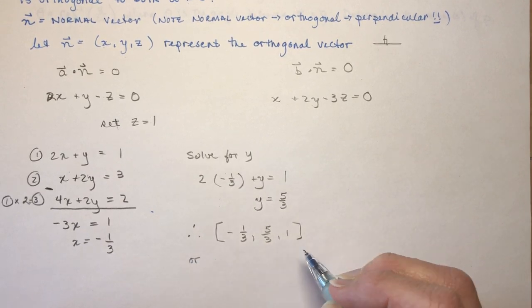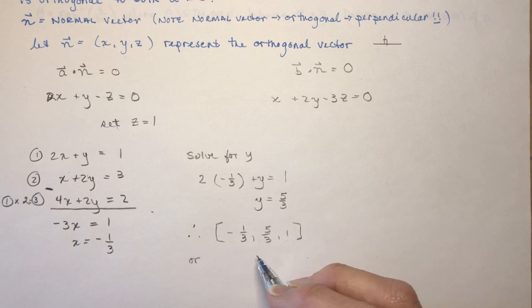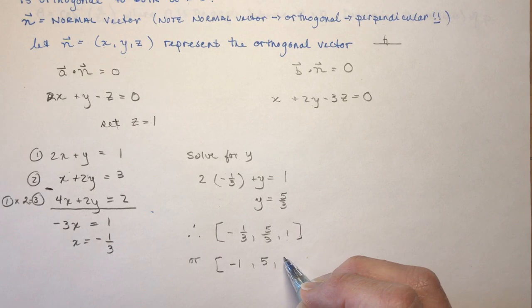Or, even better, we take a scalar multiple of this by, and getting rid of these denominators. So I could say minus 1, 5, and 3.